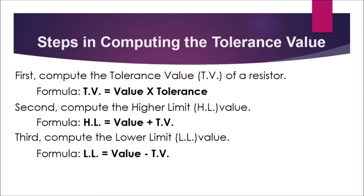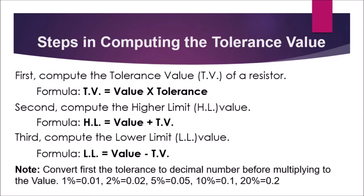Note: convert the tolerance to a decimal number before multiplying it by the value. So 1% is equal to 0.01, 2% is equal to 0.02, 5% is equal to 0.05, 10% is equal to 0.1, and 20% is equal to 0.2.